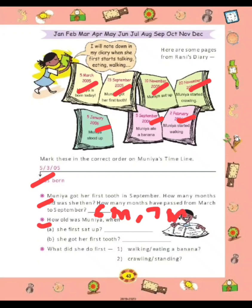Now next: how old was Muniya when she first sat up? She is 8 months old when she started sitting. She got her first tooth — when did she get her first tooth? At the age of 6 months. She was born on 5th March, and she got her first tooth in September, so the total is 6 months.